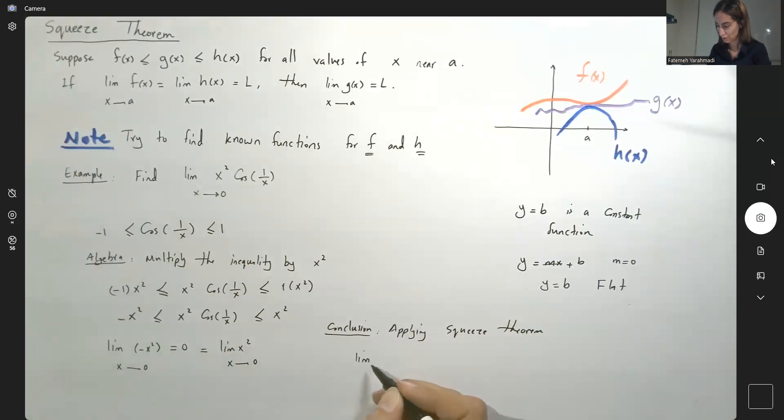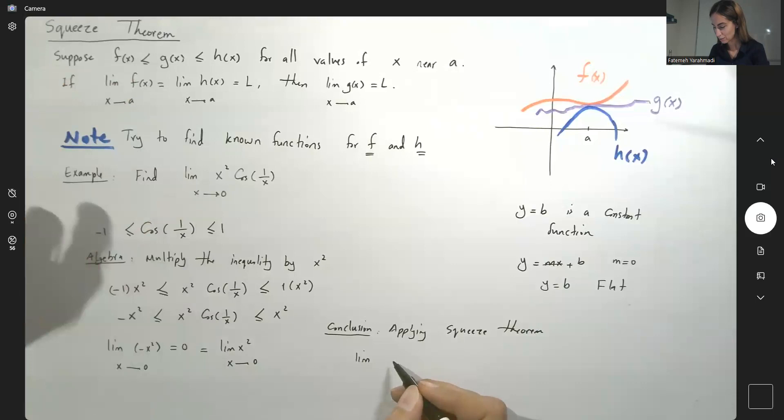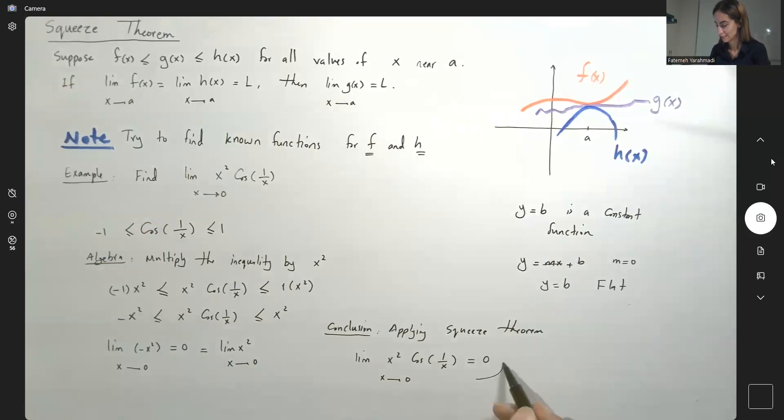The conclusion is applying Squeeze Theorem. The limit of g of x, which in this case is x squared cosine of 1 over x as x approaches 0, is also 0.